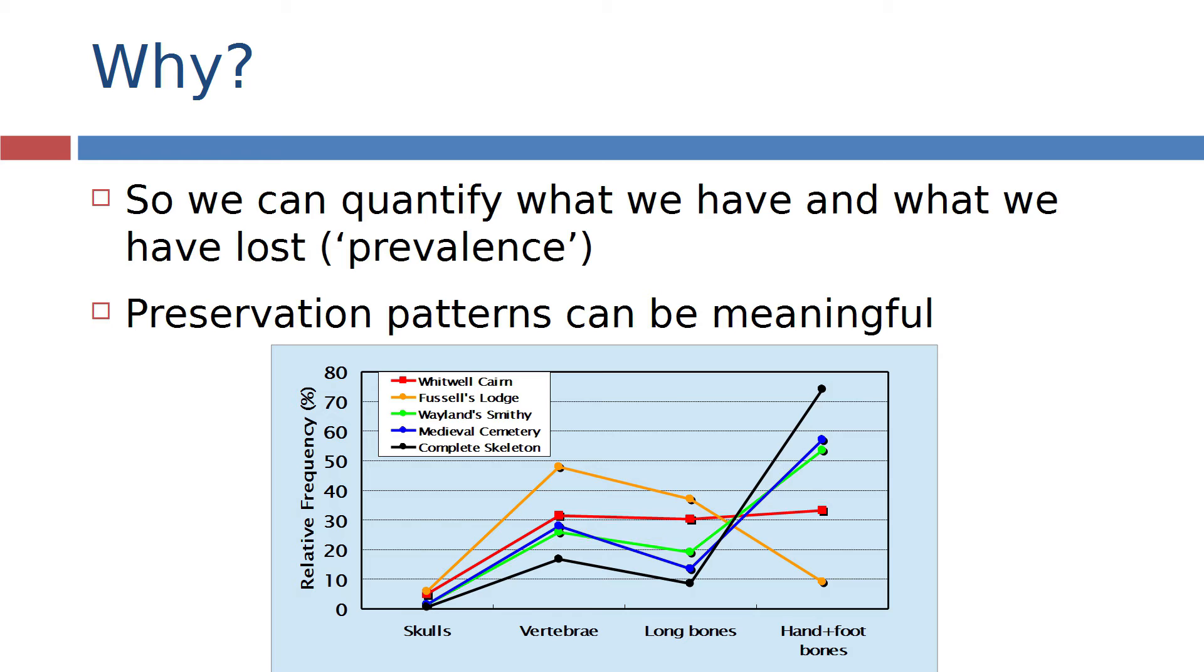The other three lines, the orange line, the green line and the red line represent different Neolithic cemeteries, different structures and you can see that some of these vary quite considerably from the proportion of different elements we would expect. In particular if you look at Fussell's lodge there's a very very low representation of hand and foot bones.